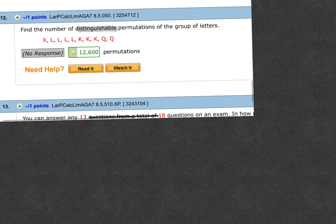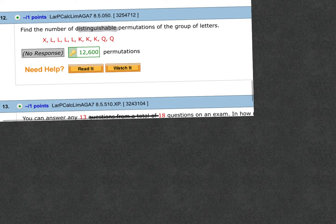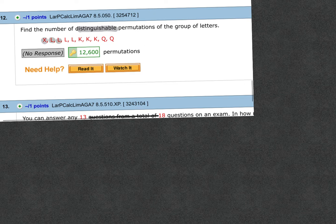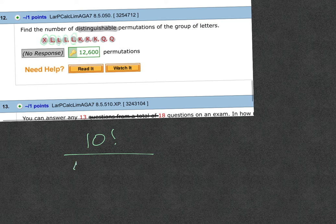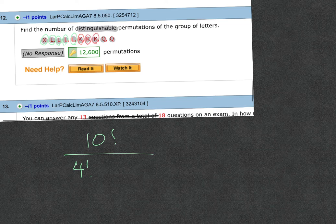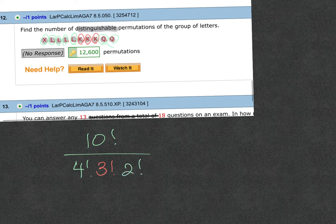First of all, it says distinguishable permutations. I feel like it almost always says that, so that's your hint. But two, you have something in which the letters repeat. So it would be 10 factorial in the top. And then there's only one X, which you don't need the 1 factorial, but you could put it. There are 4 L's, so 4 factorial. There are 3 K's, 3 factorial. And there are 2 Q's, 2 factorial. And then you simplify it from there.